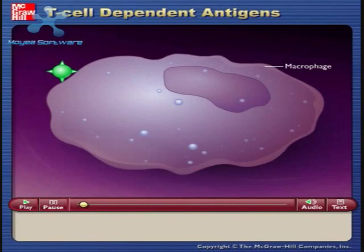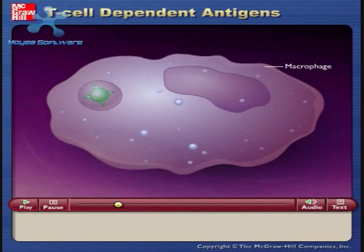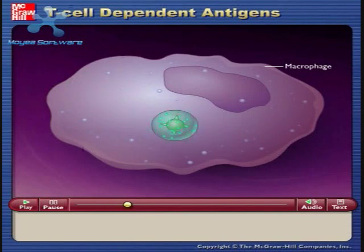Proteins generally require the cooperation of T helper cells, TH2, to stimulate B cells into becoming antibody-producing cells and memory cells. Such antigens are therefore said to be T cell dependent. The protein antigen is first ingested and then broken into peptide fragments by an antigen presenting cell, such as a macrophage.